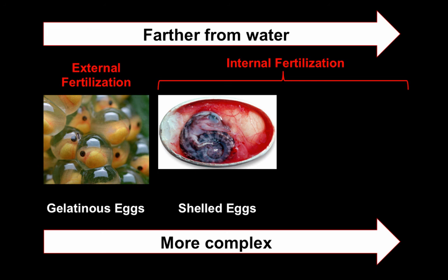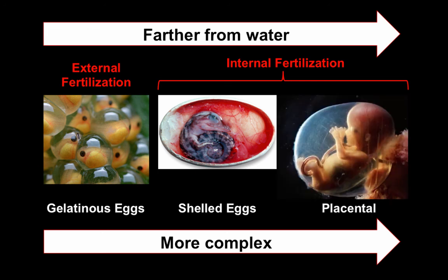Now we can actually have reptiles that live in the desert, and we're getting a little bit more complex. And then finally, we have our placental reproductive system that allows us to live basically anywhere on Earth and be as complex as necessary, because the mother is continually providing those services to the baby as it develops.